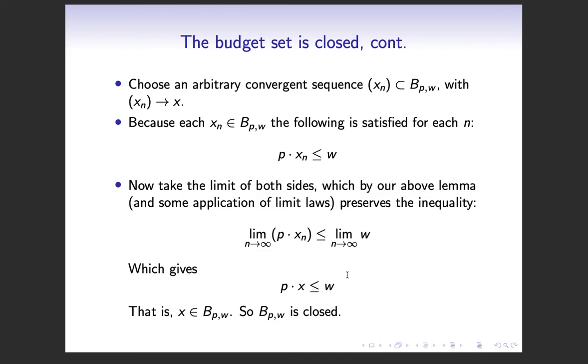So when we want to show that the budget set's closed, we're going to use that result. But first you want to choose an arbitrary convergent sequence in the budget set. So the sequence converges. Remember, it's a little confusing with the subscript. This is not specific goods. This is a sequence of bundles of goods. So the sequence of bundles of goods converges to a single bundle, X.